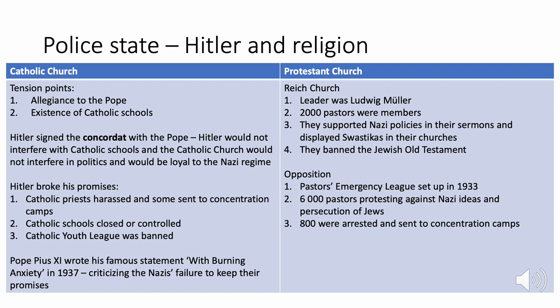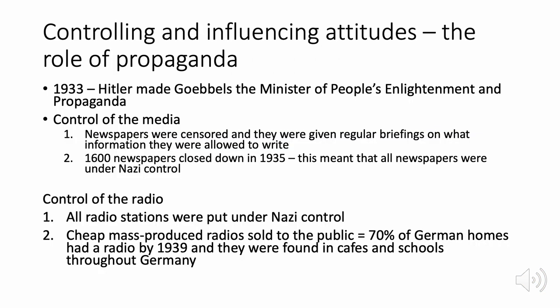Regarding the Protestant Church, the Nazis set up the Reich Church, led by Ludwig Müller, with 2,000 pastors as members. They supported Nazi policies in sermons, displayed swastikas in churches, and presented Christianity in a Nazified way — banning the Jewish Old Testament. However, there was significant opposition through the Pastors' Emergency League, which had 6,000 pastors — three times the membership — protesting Nazi ideas. 800 of them were eventually arrested and sent to concentration camps.